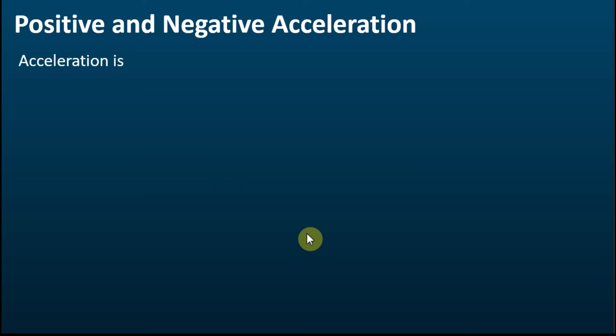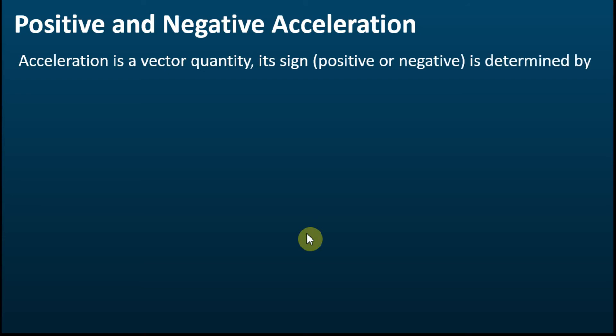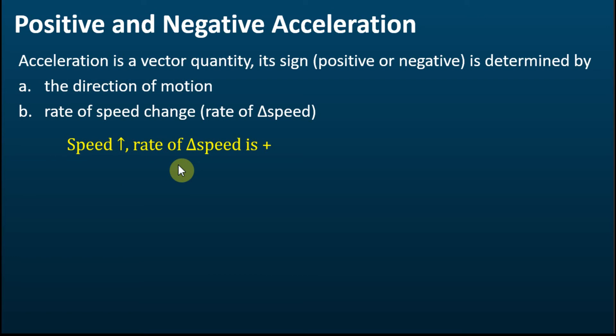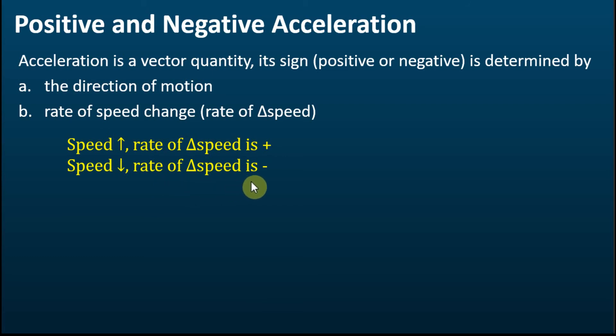Acceleration is a vector quantity. Its sign is determined by the direction of motion and the rate of speed change. The direction of motion can be positive or negative. The change in speed can also be positive or negative. If the speed increases, the rate of speed change is positive; if the speed decreases, the rate of speed change is negative. Let's see how the positive and negative signs of acceleration are determined.